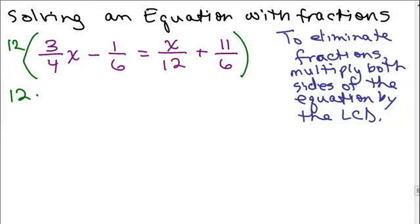So you multiply 12 times each term on both sides of the equation. Because remember, you can't just multiply 12 by one side of the equation. You have to multiply it on both sides of the equation. So 12 times x over 12 plus,